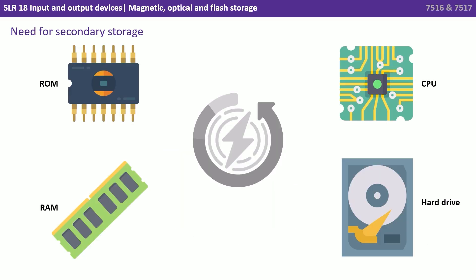So why is there a need for secondary storage? On the screen here we have an abstraction. We see ROM in the top left, RAM in the bottom left, a CPU in the top right, and a hard drive in the bottom right. We also have a symbol in the middle of the screen that determines whether our computer currently has power and is turned on or is turned off — it's currently turned off.